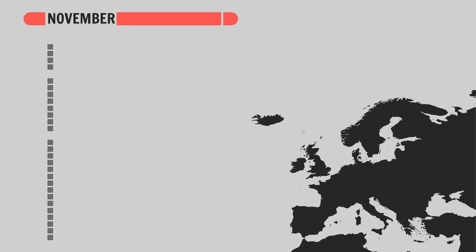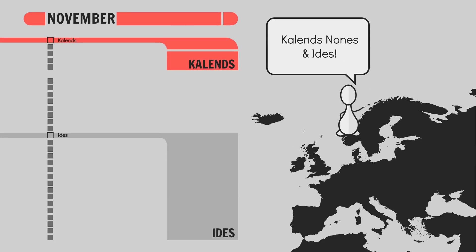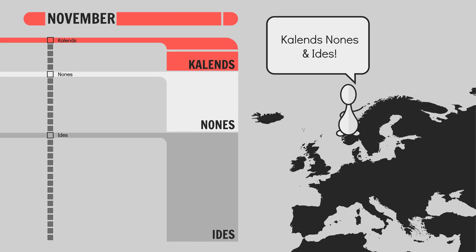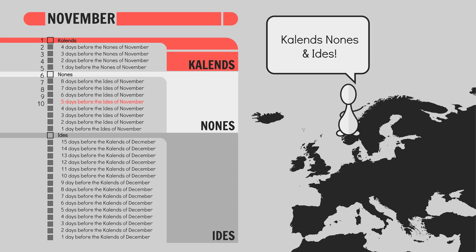In Europe in the Middle Ages, the month was divided into three asymmetrical periods, defined by three important dates: Calends, Nones, and Ides. Calends was the first day of the month, Ides fell at the midpoint of the month, and Nones fell on the 9th day before the Ides. And people would count the days backwards from these markers. The 10th day of November, for example, was referred to as the 4th day before the Ides of November. Which is kinda cool, and a reminder that counting upwards isn't a universal law.